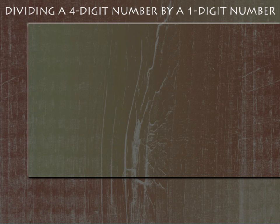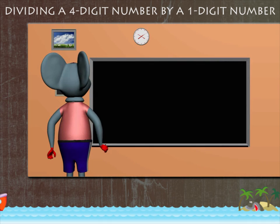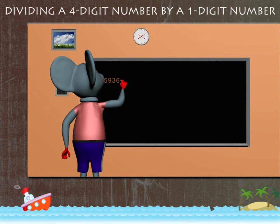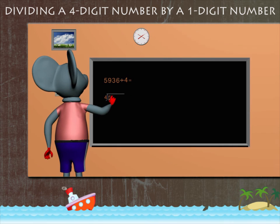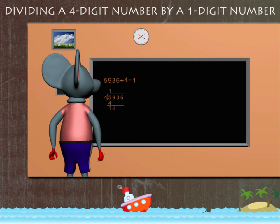Dividing a four-digit number by a one-digit number. Robbie Mouse has a new question: it is 5936 divided by 4. Robbie uses the long method. Four can divide five once, so quotient one and remainder one. Copy nine. Four divides 19 four times, so quotient four, remainder three.